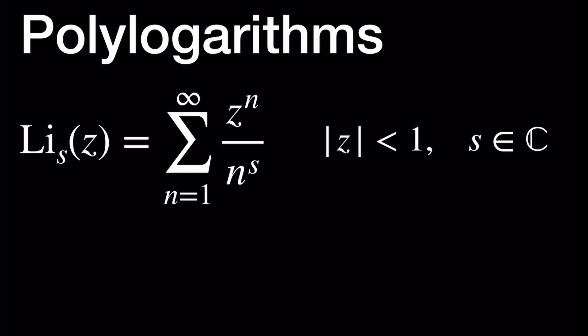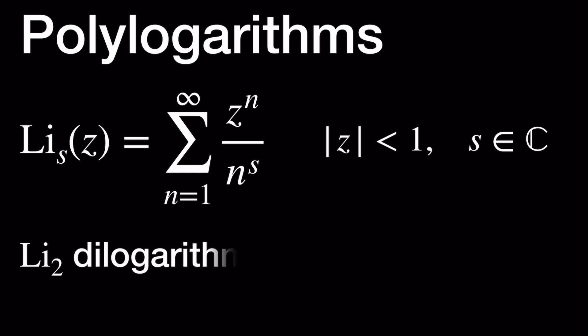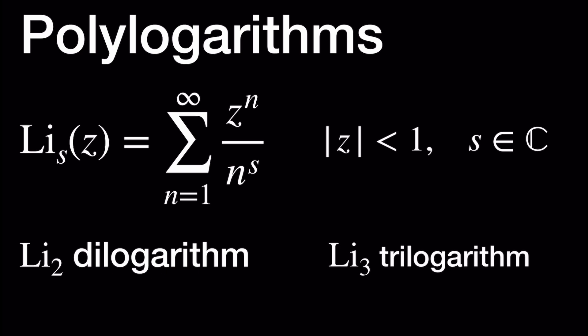Now let's look at some other definitions. Among all the polylogarithms, only two of them have names. We have the dilogarithm, which corresponds to S equals 2, and the trilogarithm, which corresponds to S equals 3.